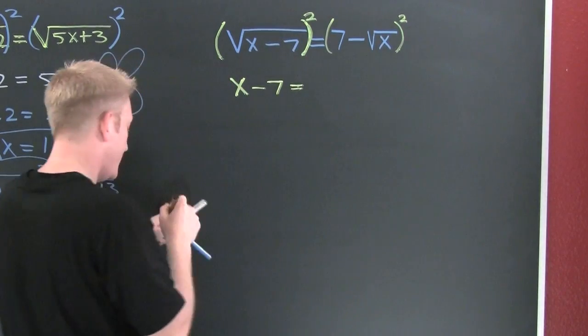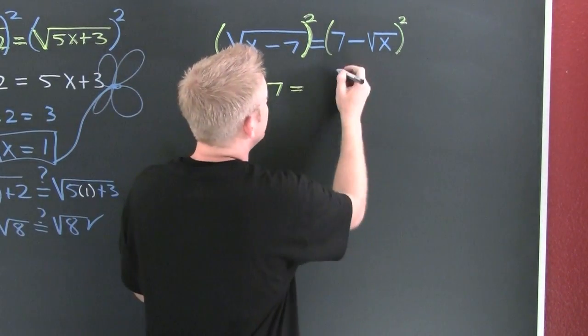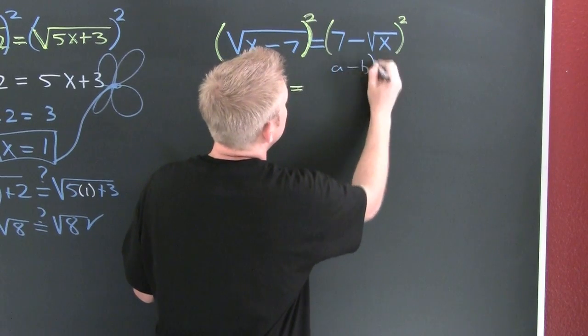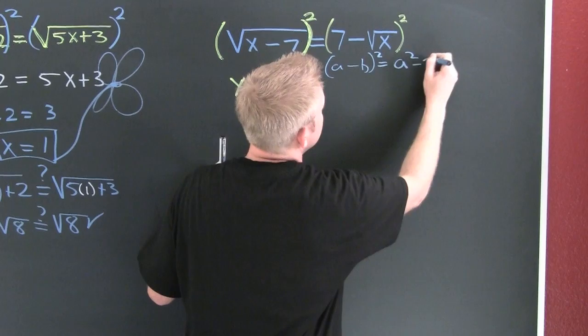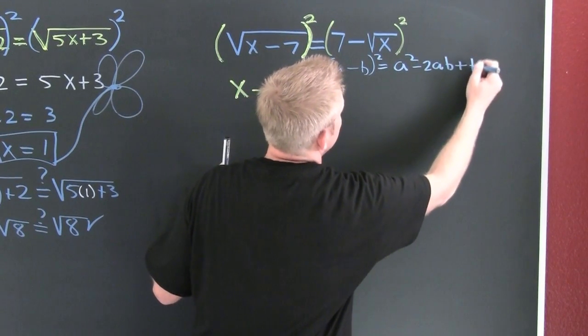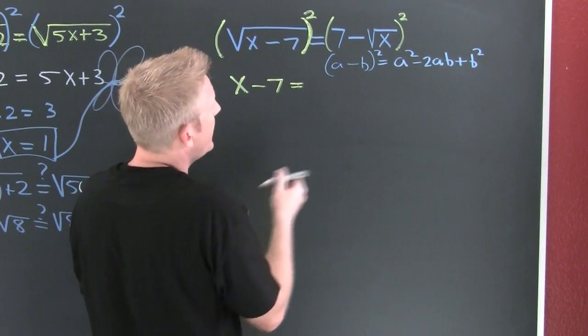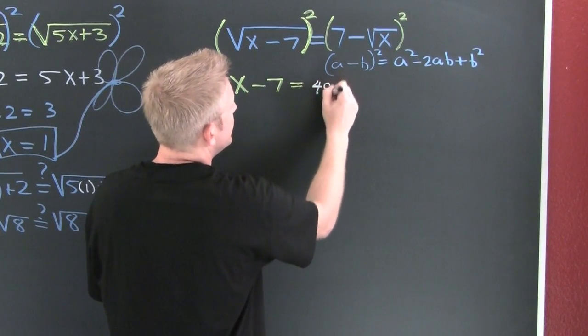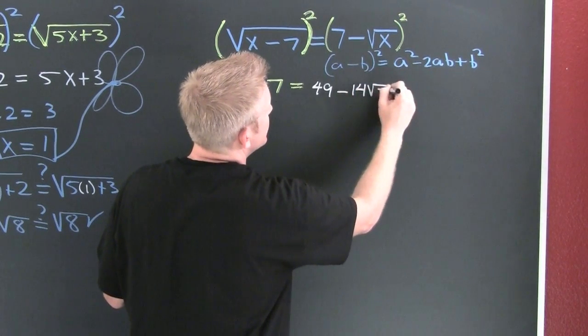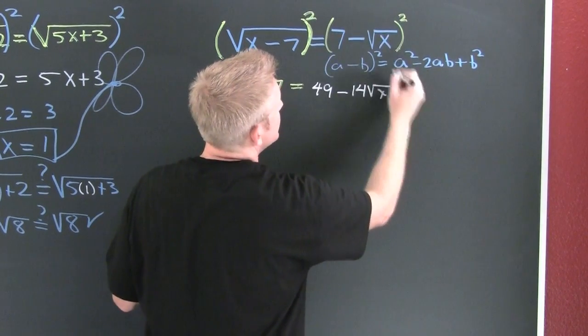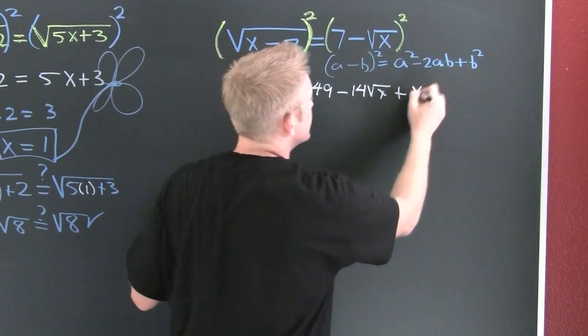And then on the right, look at the special products video. If I had a minus b squared, that's going to be a squared minus 2ab plus b squared. Seven squared happens to be 49, this one times that one doubled, minus 14 roots of x, plus the square root of x squared is x. Notice we used a special product from our special products video.